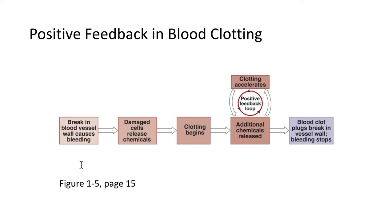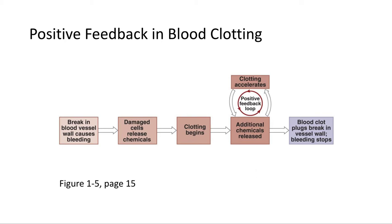Let's look at an example of positive feedback. Say you get a paper cut — it causes a break in a blood vessel and you start to bleed. The damaged cells release chemicals that cause blood clotting to begin. This enters a positive feedback loop: as clotting occurs, more chemicals are released, speeding up clotting further. More clotting releases more chemicals, which cause more clotting — a runaway loop that continues until the blood clot plugs the break in the vessel wall and the bleeding stops.